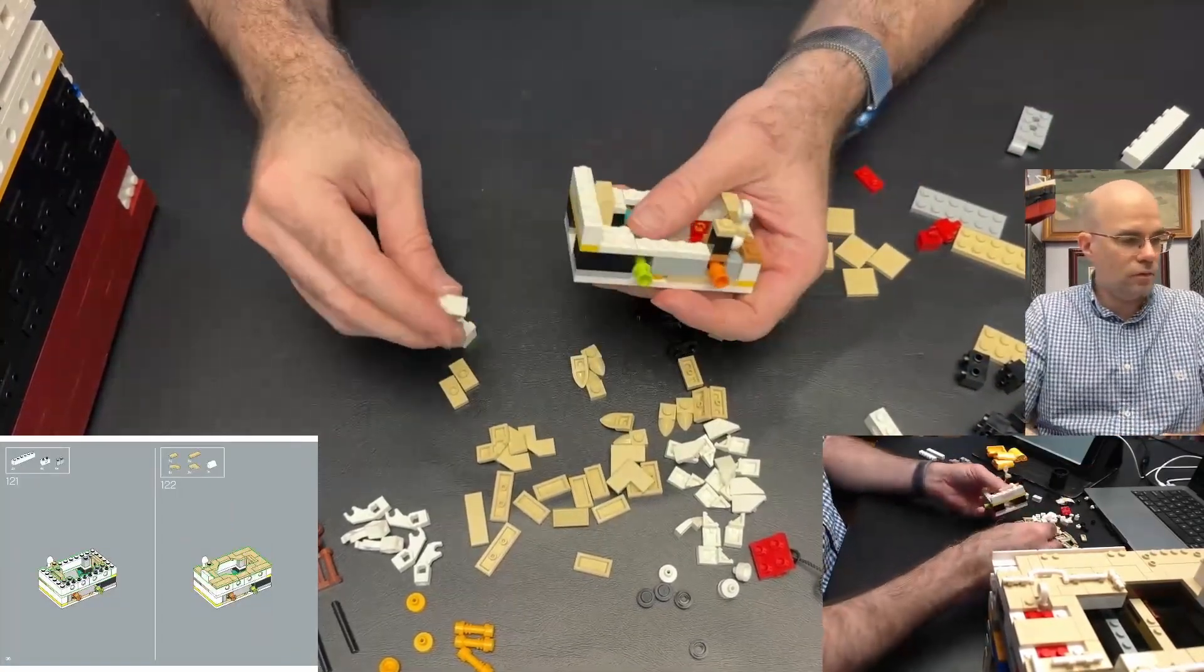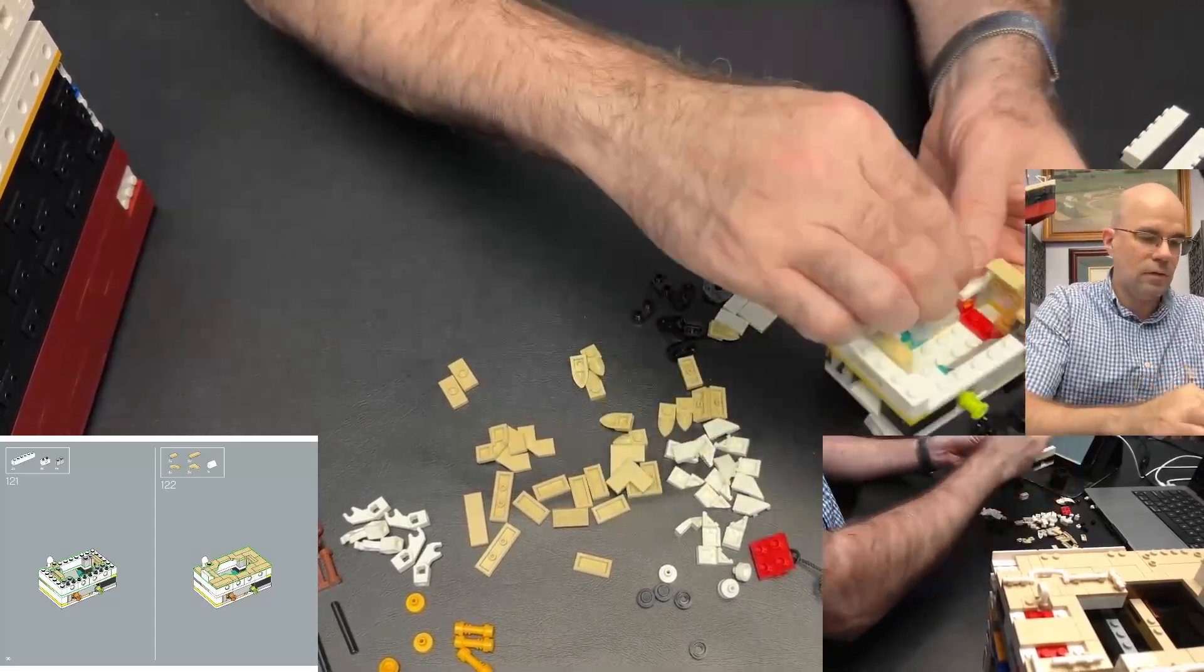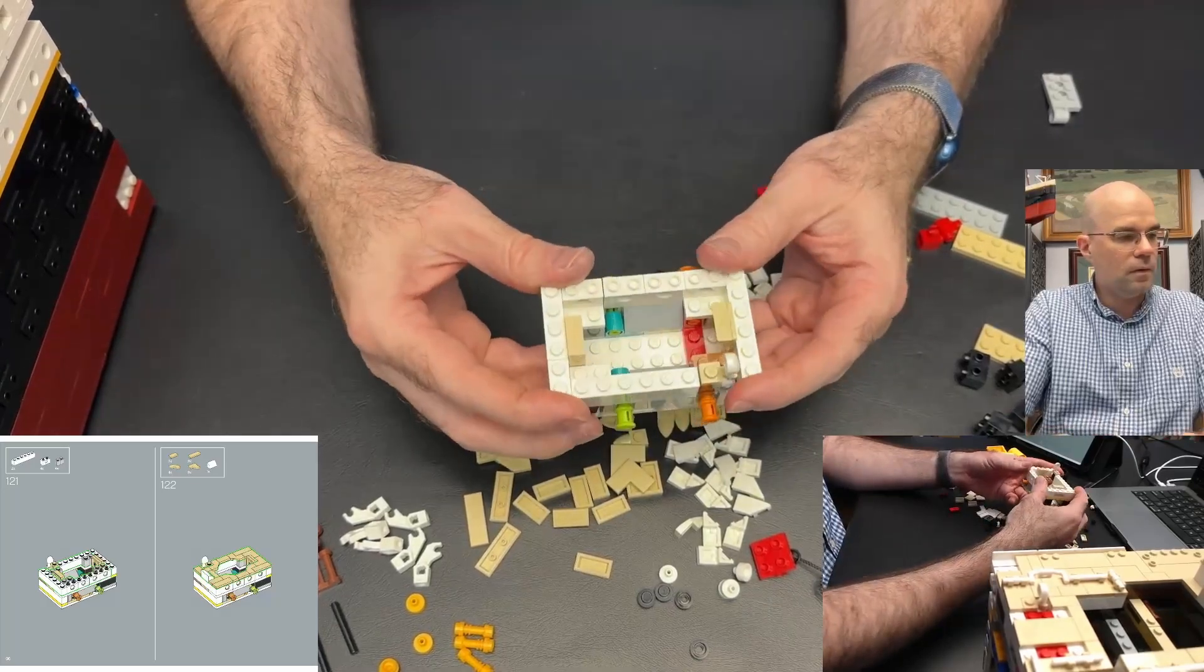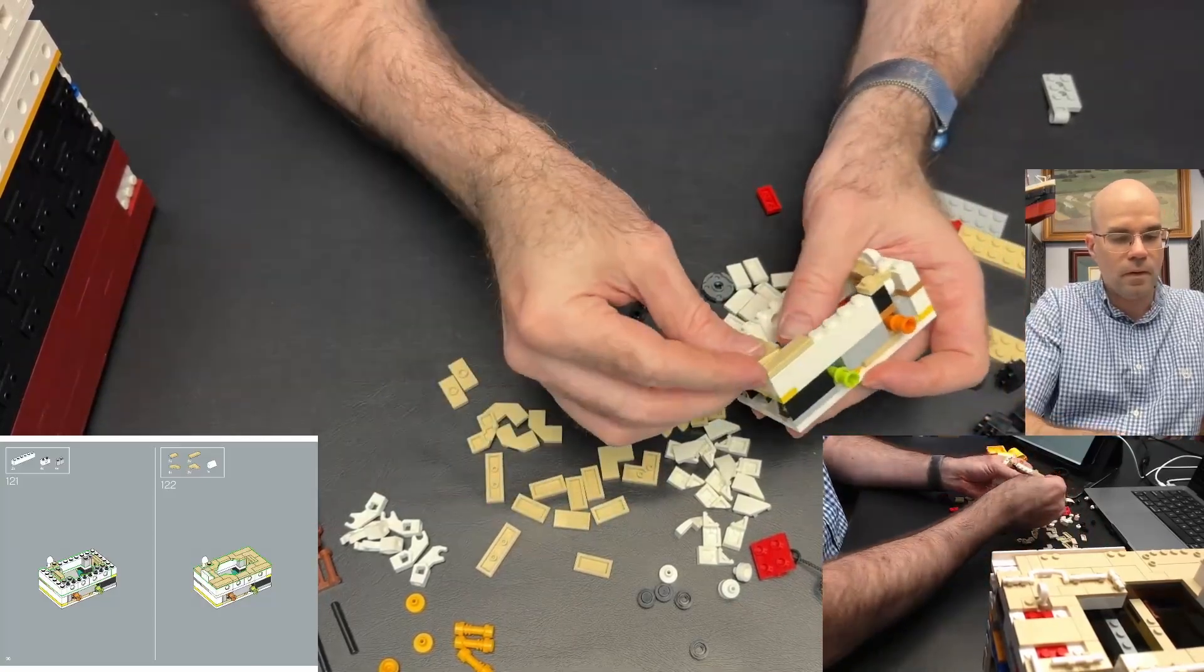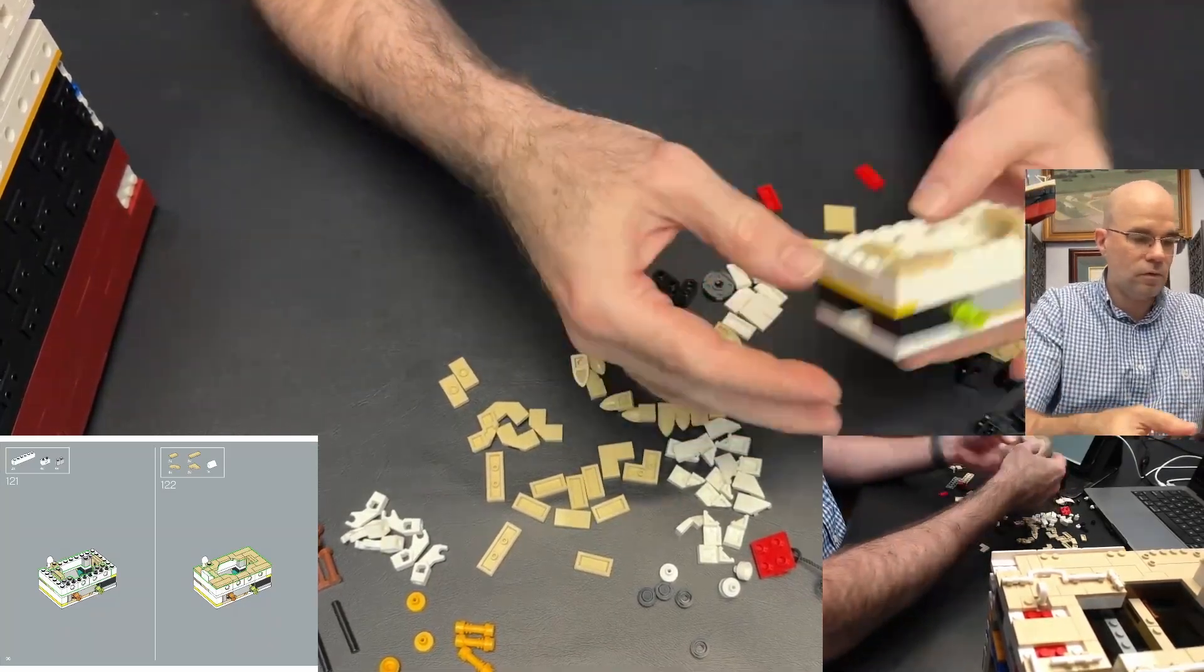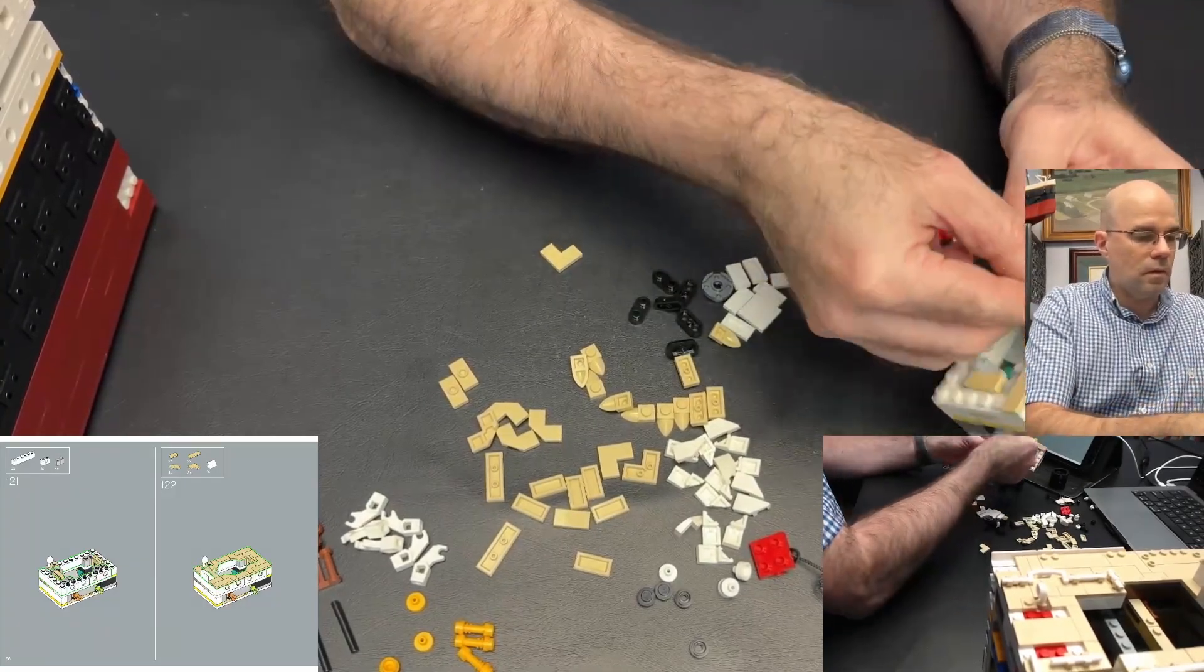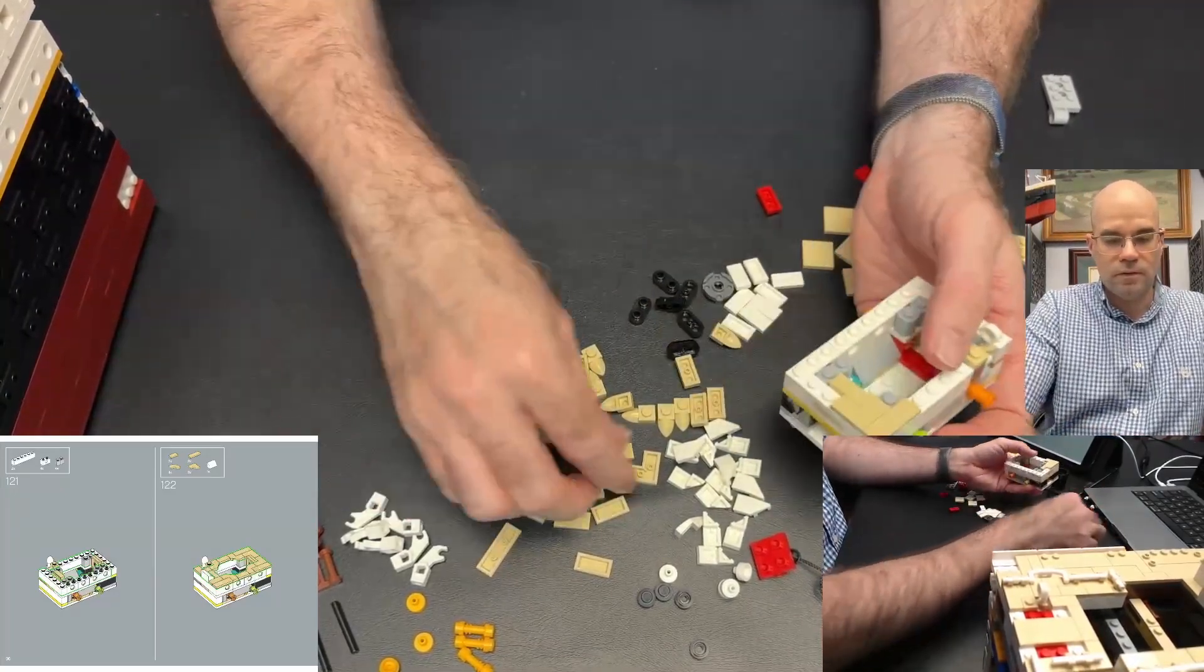And some portholes. Portholes go on this side. There we go. And tile it off. Oh, I forgot the palisade bricks that go in there in the corners.